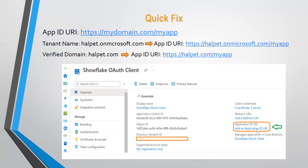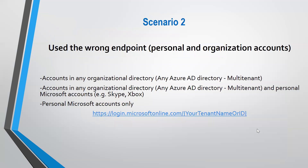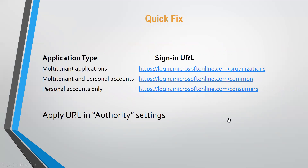The second scenario is the use of a wrong endpoint. When accessing the application, your authentication call must target a URL that matches your registered app's supported account type. If your app was set to multi-tenant, multi-tenant and personal, or personal only, but you are using https://login.microsoftonline.com/{tenant-name-or-id}, users from other organizations will not be able to access your application — you would have to add them as guest users in your tenant.